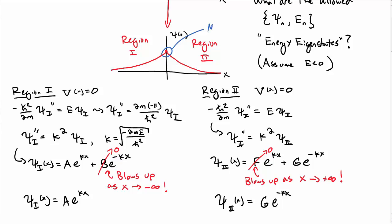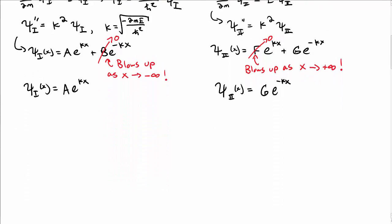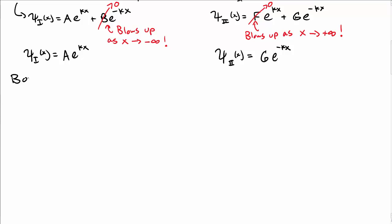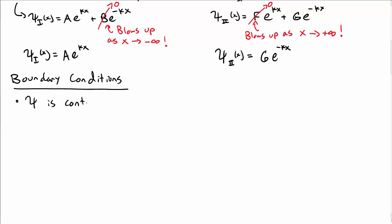We have our wave functions in our two regions, and now we need to match them at the boundary condition. So we need our continuity conditions. The wave function must be continuous at all places. In particular, psi 1 at x equal to 0 must equal psi 2 at x equal to 0, which means A equals G.